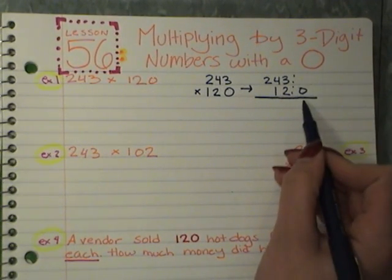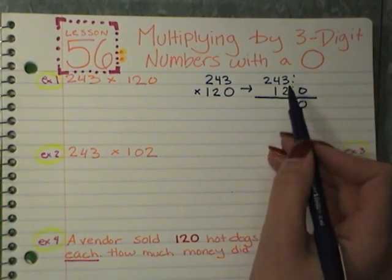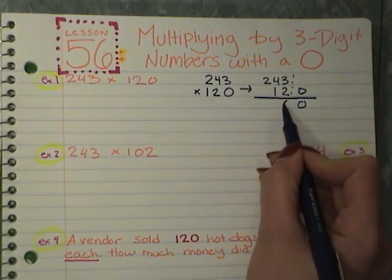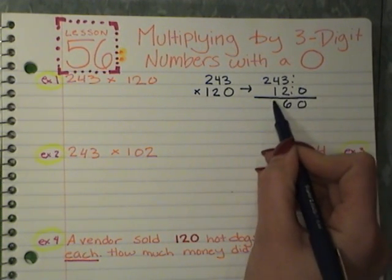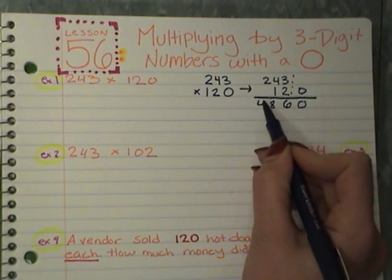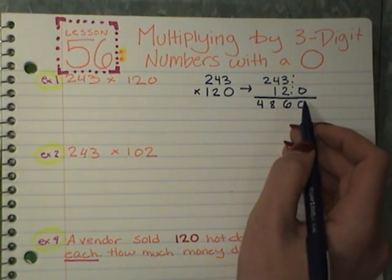So what you can do, drop your zero like normal, and now do your problem. 2 times 3 is 6, 2 times 4 is 8, 2 times 2 is 4.